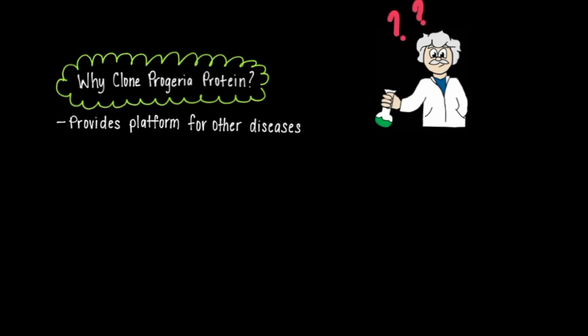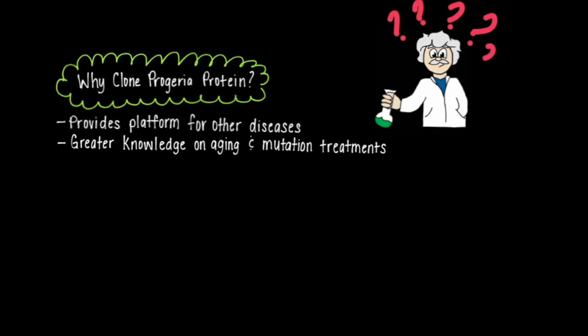HGPS is a platform for research on diseases caused by mutations. Given that progeria is so rare and the lifespan of a person born with the mutation is so short, there is a lack of effort placed into researching the disease or finding a cure. Although it would be difficult to find a cure for such a disease, research could provide greater knowledge on aging and mutation treatments not just for HGPS, but also for many other diseases caused by mutations in the genome.